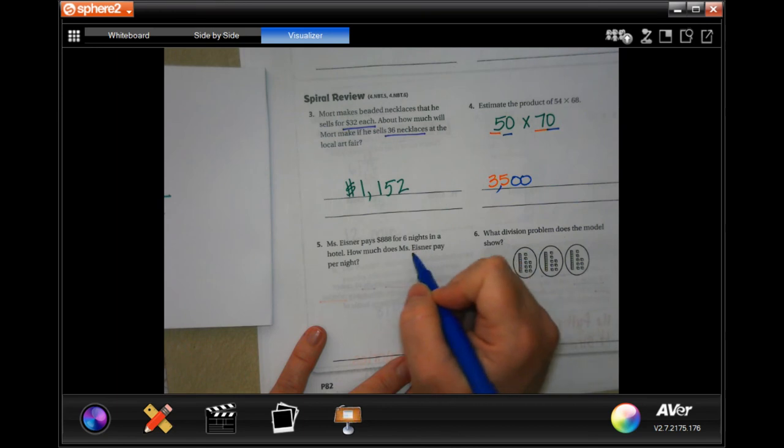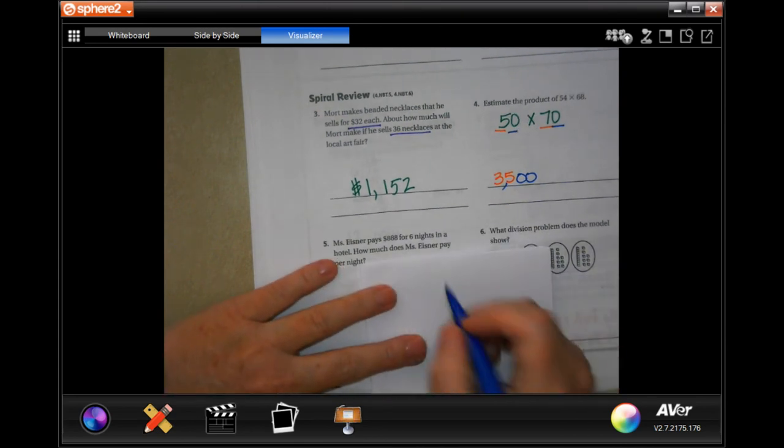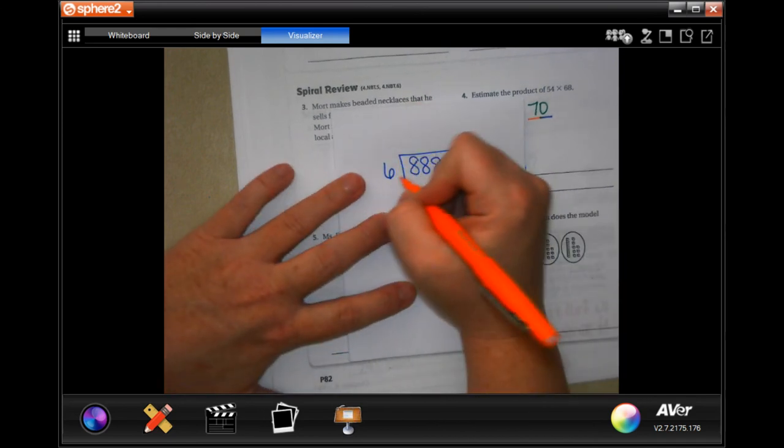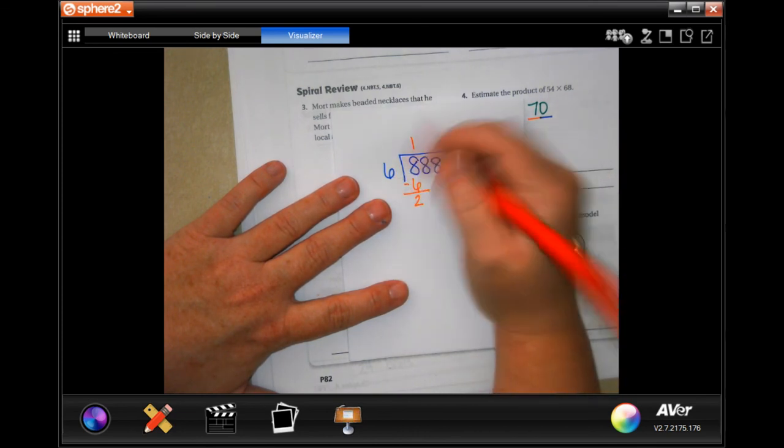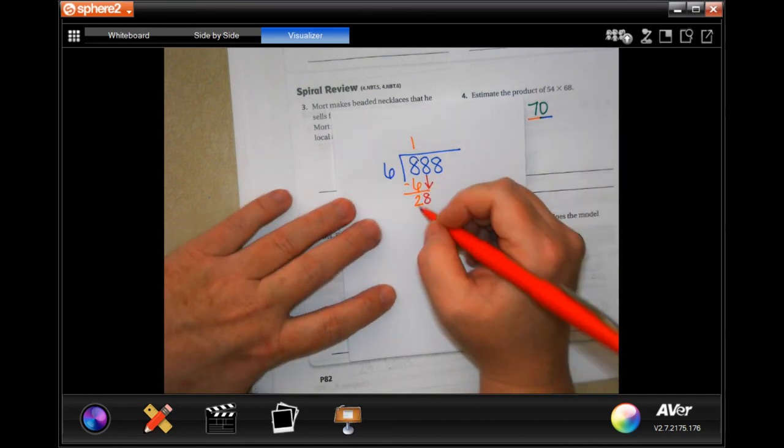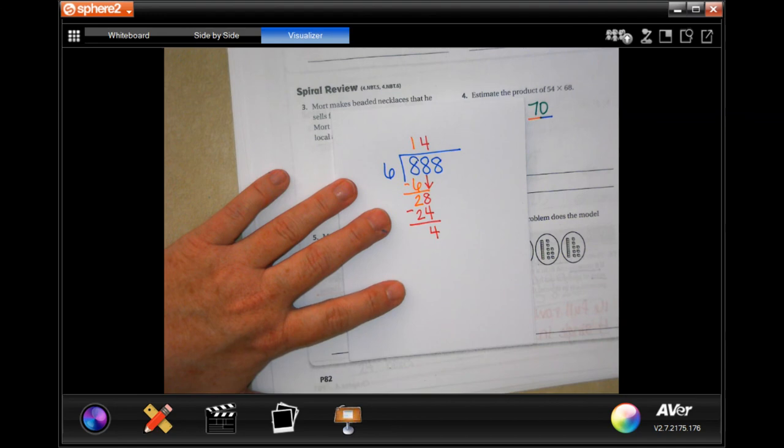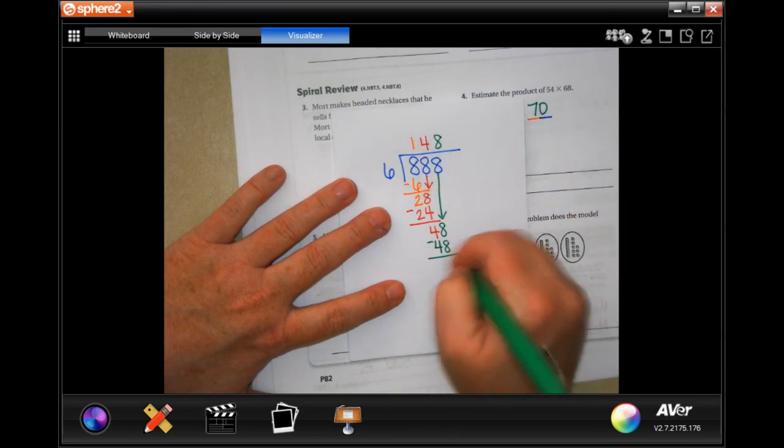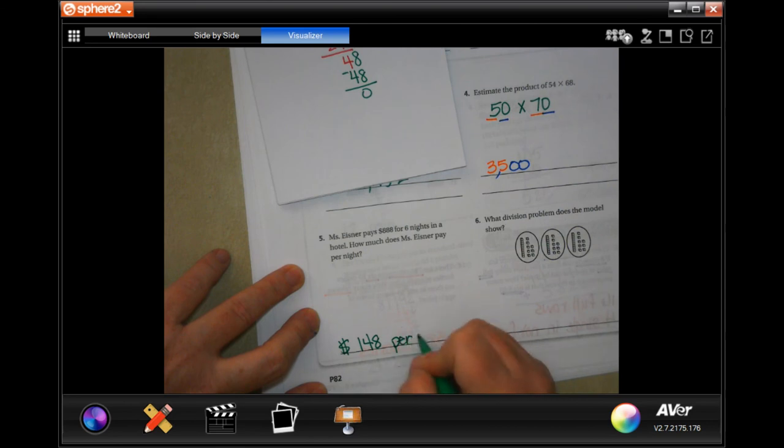Chris Eisner pays $888 for six nights in a hotel. How much does she pay for a night? Well, let's do some math and find out. So $888 for six nights, but we only want one night. Six will go into eight one time. One time six is six. Subtract, get two. Two is smaller than six. So I'm going to bring down my eight. Six will go into 28, four times. Four times six is 24. Subtract, get four. Four is smaller than six. So I can bring down my eight. And six times eight is 48. Subtract, get zero. So $148 per night.